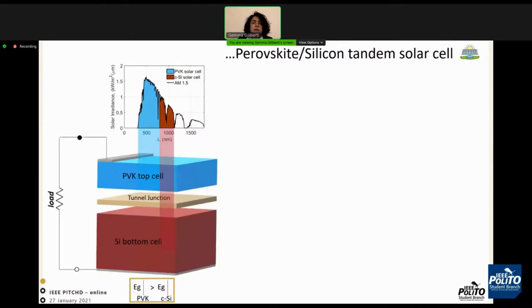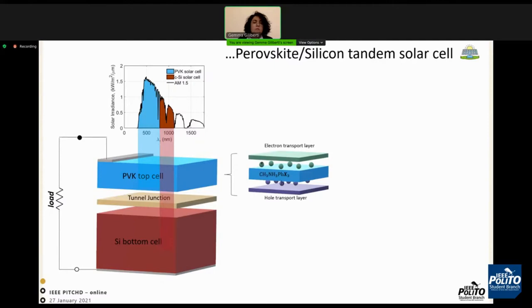So, in order to overcome this limit, a possible efficiency improvement is found in perovskite-silicon tandem solar cells, where the perovskite material that has an energy gap greater than silicon is placed on top of a silicon bottom cell.